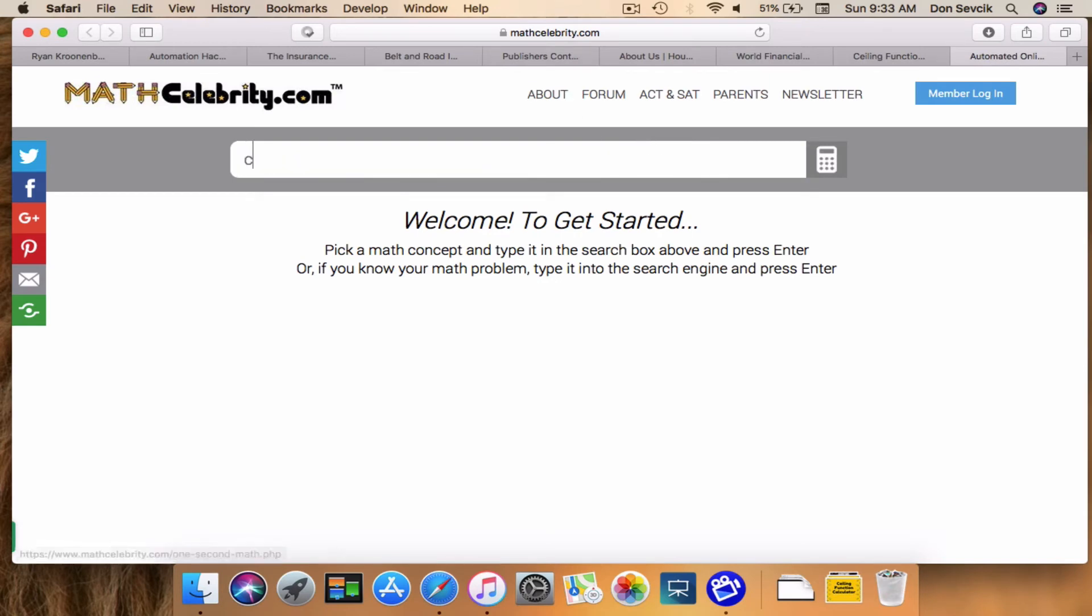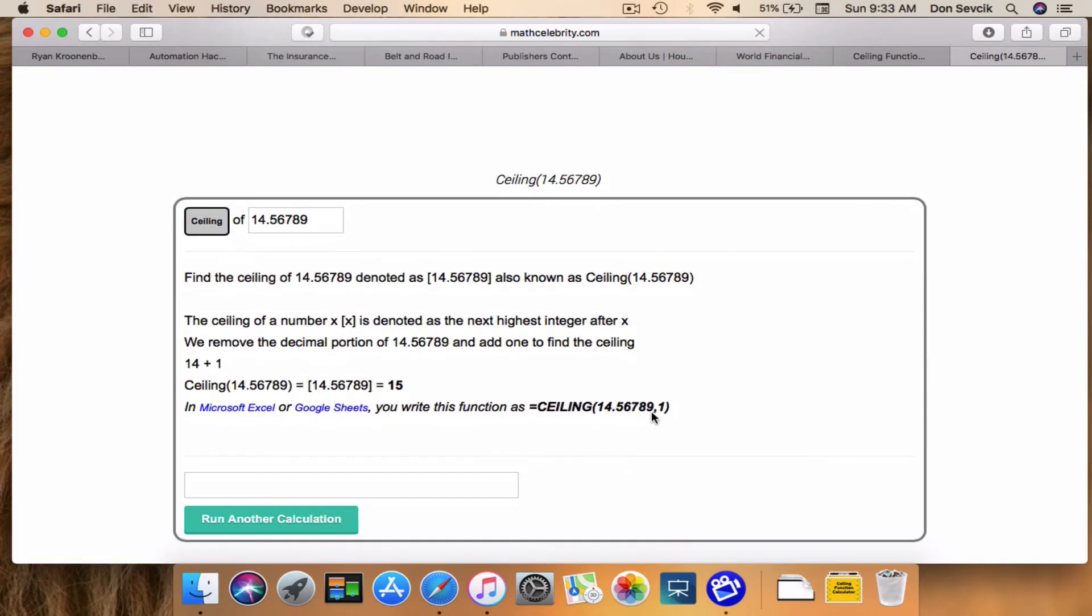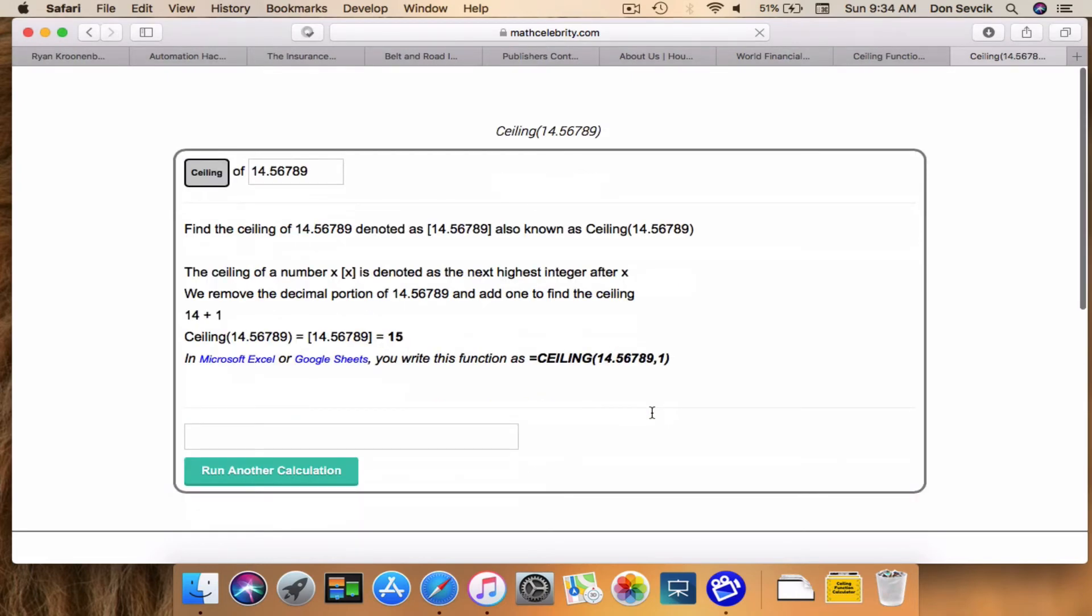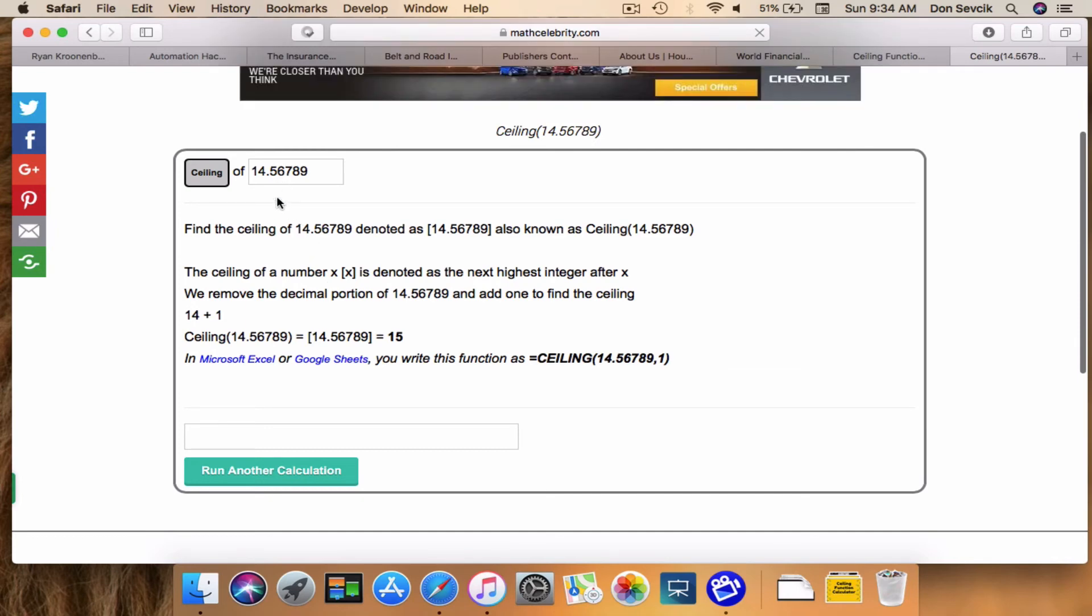We're going to do, we'll just make up a number. Ceiling of 14.56789. And you hit return. And this calculator will run the steps that we ran in the presentation. And it says, okay, this number is not an integer. So we're going to take the integer of the number, add one, and we get our ceiling, which is 15.